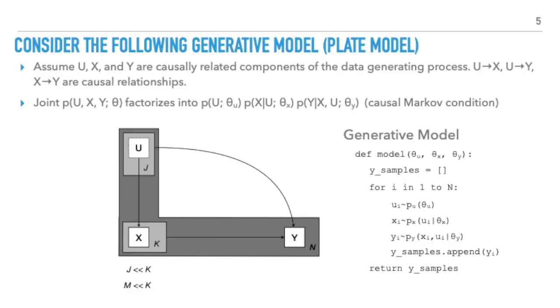Suppose we have the following plate model representation of a data generating process. We generate n iid points of the variables U, X, and Y. We assume the directed structure of the graph reflects actual causal relationships between U, X, and Y in the true data generating process. We further assume the causal Markov condition, meaning that the joint probability distribution between U, X, and Y will factorize along the causal graph into the product of conditional distributions on each node. So we get a generative model that samples each of these items in sequence. Let's further assume that the parameters of these conditional distributions are known a priori.